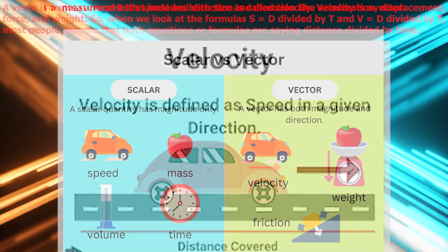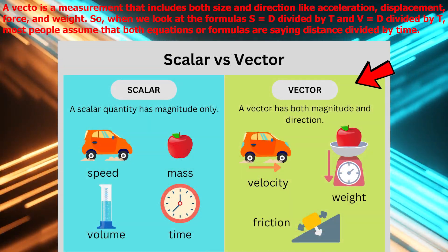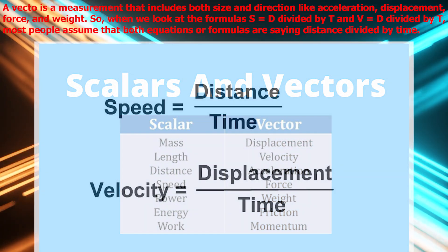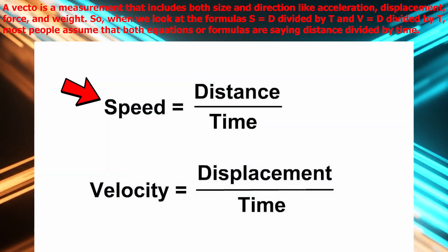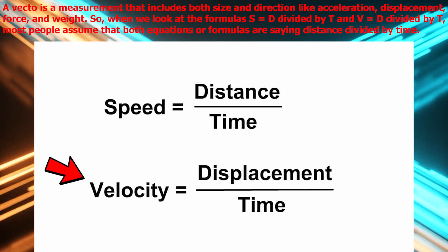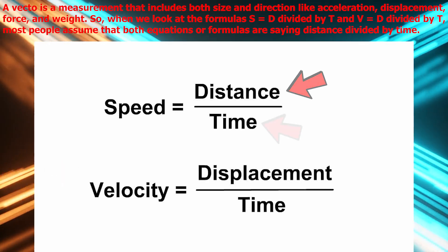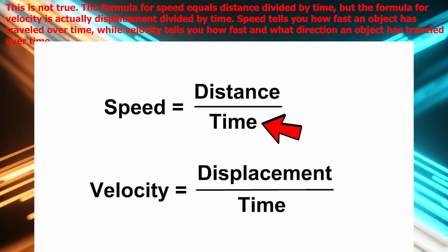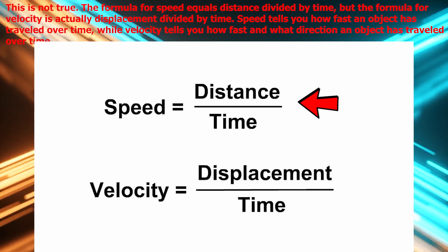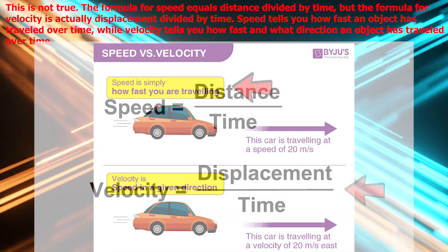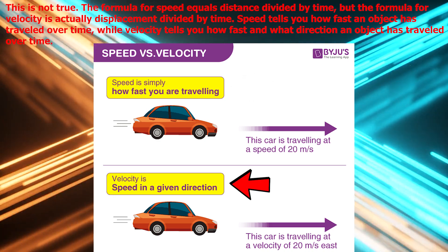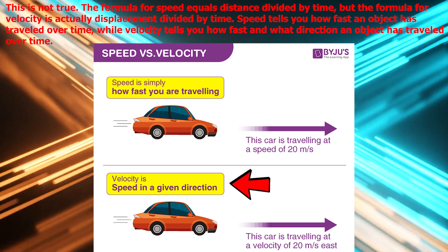The measure of both speed and direction is called velocity. Velocity is a vector. A vector is a measurement that includes both size and direction like acceleration, displacement, force, and weight. So when we look at the formula S equals D divided by T and V equals D divided by T, most people assume that both equations or formulas are saying distance divided by time. This is actually not true. The formula for speed equals distance divided by time, but the formula for velocity is actually displacement divided by time. Speed tells you how far an object has traveled over time while velocity tells you how far and what direction an object has traveled over time.